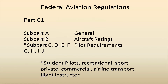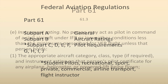Part 61 is divided into subparts. Subpart A is the general section. Subpart B goes through aircraft ratings, and then C through J deals with all kinds of different pilot certificates like the student pilot, recreational, sport, private, and so on and so forth.